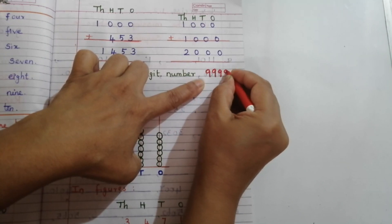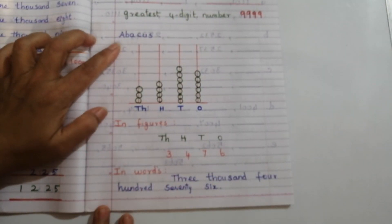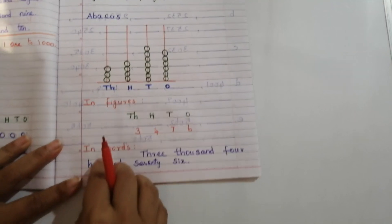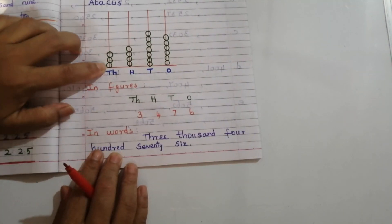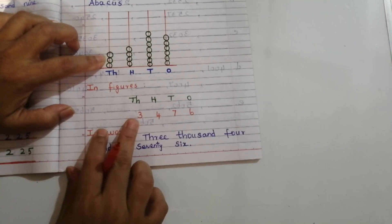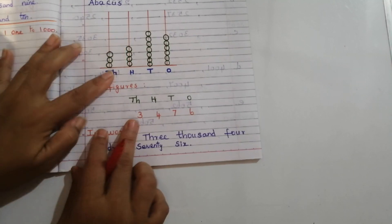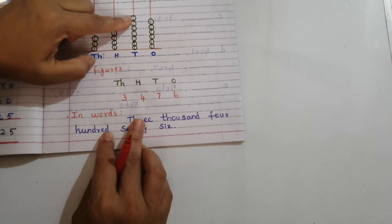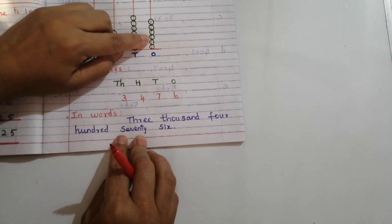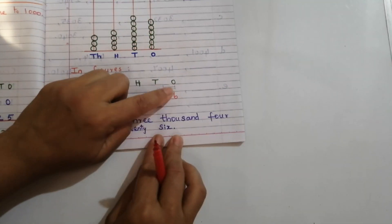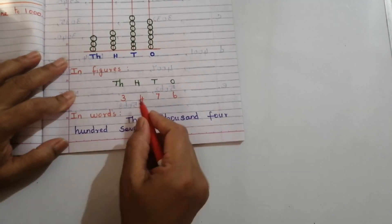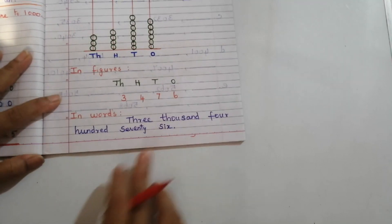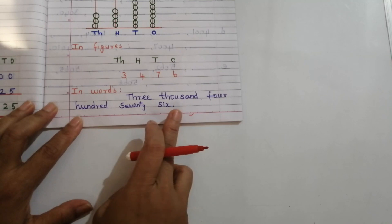Here is the abacus representation of a four-digit number: ones, tens, hundreds, and thousands. If written in figures — in the thousands place there are 3 beads so write 3; in hundreds place 4 beads so write 4; in tens place 7 beads so write 7; in ones place 6 beads so write 6 — giving three thousand four hundred and seventy-six.